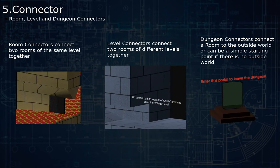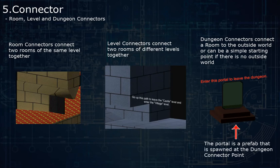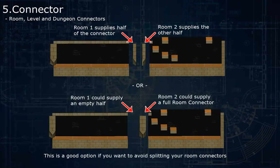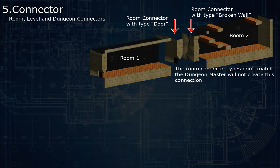Connectors, as the name implies, allow you to connect elements together — so two levels, or a dungeon to the outside world, or two rooms. A connector usually contains assets, like 3D models, that will be spawned when the elements connect. A connector can be locked, meaning that the player must possess a specific key to use it. When connecting two elements together — for example, rooms — each room will supply half of the connector. And to make sure the connectors will fit together when spawned, the connectors have a connector type.